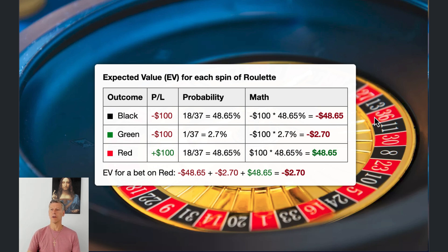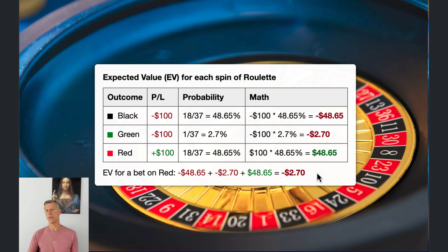For each spin, we lose $48.65 based on black's probabilities, we lose $2.70 based on green's probabilities, and we win $48.65 based on the probability it lands on red — the number we bet on. If you add all those together, for every spin of the roulette wheel we're actually losing $2.70 hypothetically based on probabilities, which is equal to the expected value.